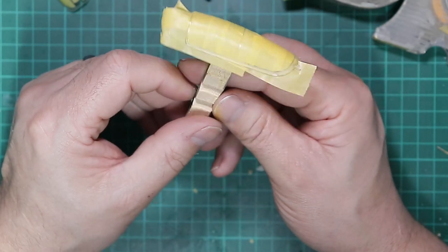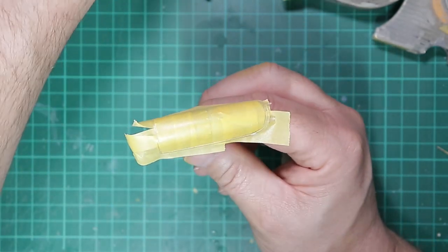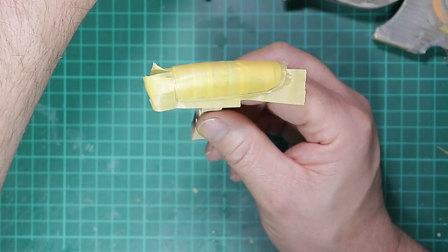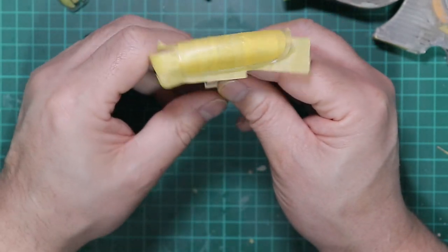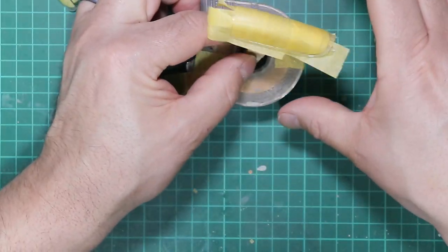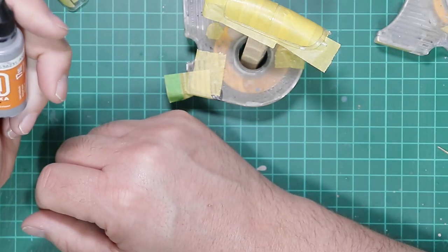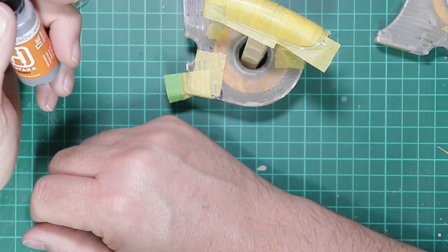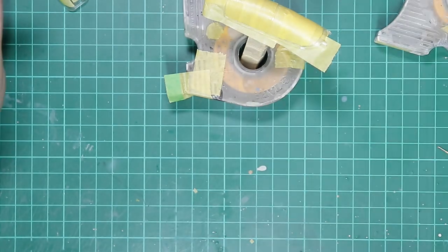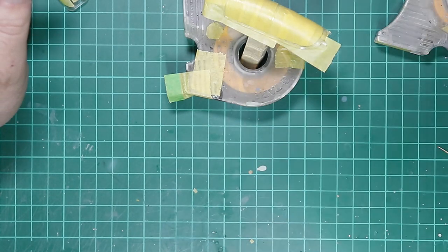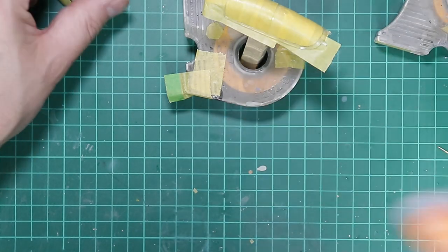Now some people could actually mask the framework inside the canopy, but I prefer to use the method that probably a lot of other modelers use, and that's to spray the interior color down onto the clear parts first, so that when viewed from inside it looks as though you can see the cockpit interior color.